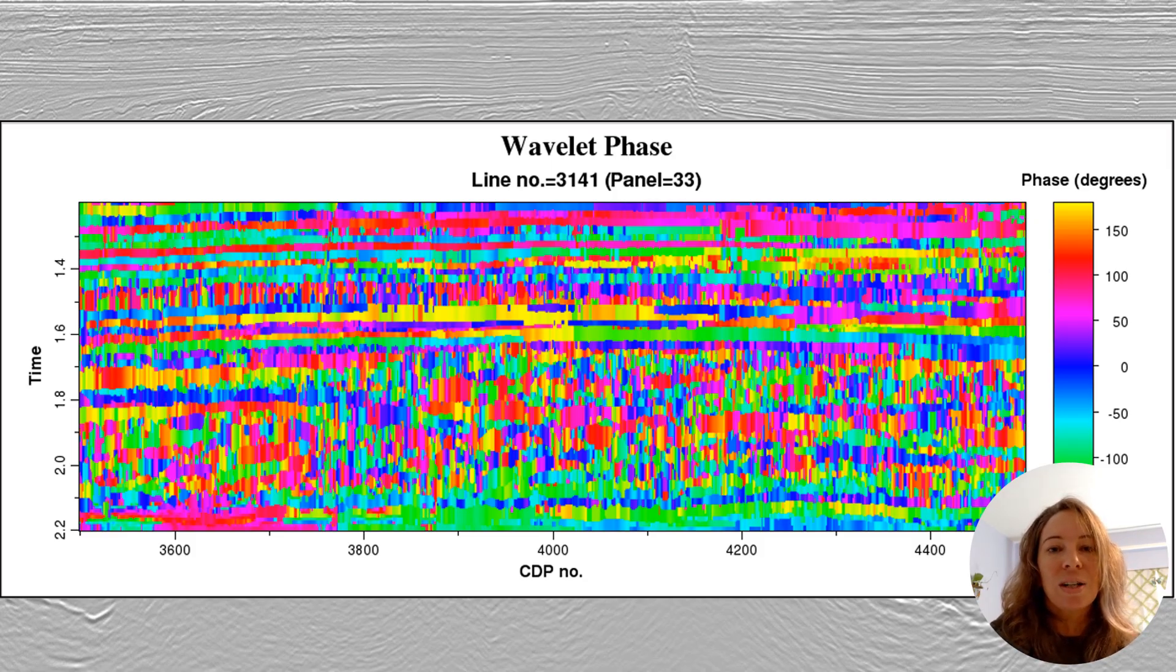The wavelet phase represents the phase values captured specifically at the envelope peaks and then interpolated between the local minima. It provides a more stable phase measurement that's less sensitive to noise and interference. Unlike instantaneous phase, which can be erratic between stronger reflections, the wavelet phase better represents the actual seismic events.